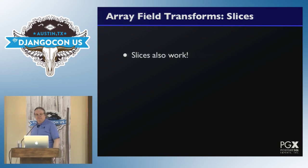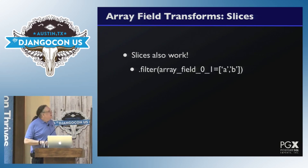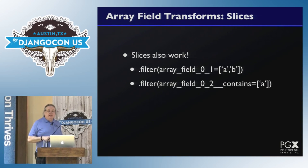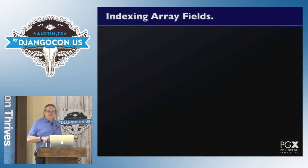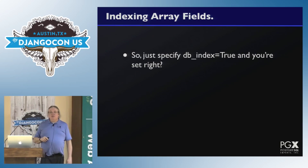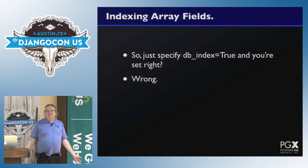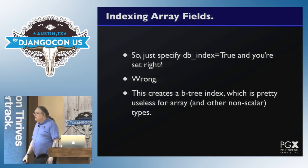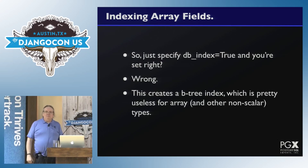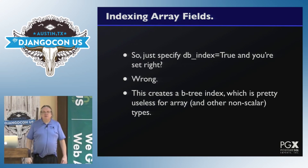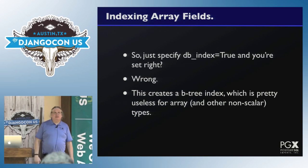You can also slice the array, which is pretty cool. You can say anything whose entries zero to one are that, or more usefully, zero to two contains 'a'. You can also index array fields — just say db_index=True and you're done, right? Wrong. It creates a B-tree index on the array, which is pretty useless for an array. So this is one of the downsides right now of using these — if you want indexing on them, and you almost certainly do, you have to do some special magic.